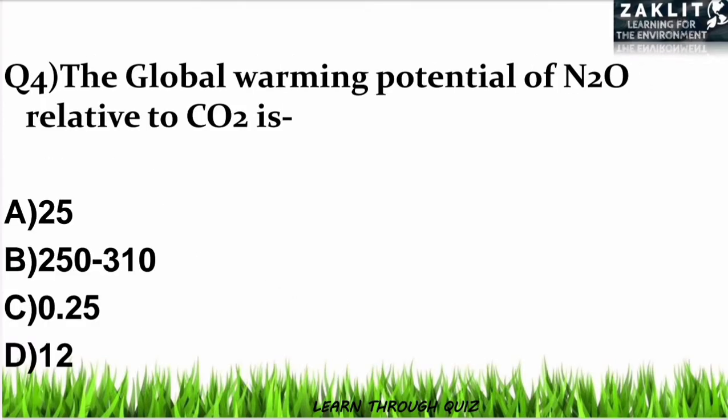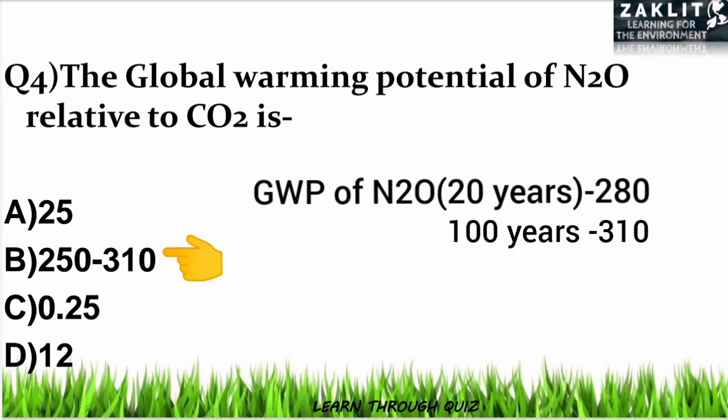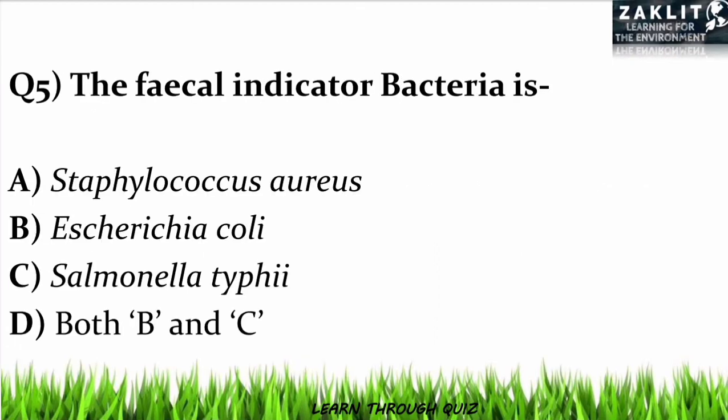The fourth question was: the global warming potential of N2O (nitrous oxide) relative to carbon dioxide is how much? The correct option is B, because the global warming potential for the time horizon of 20 years is 280 and for 100 years it is 310.